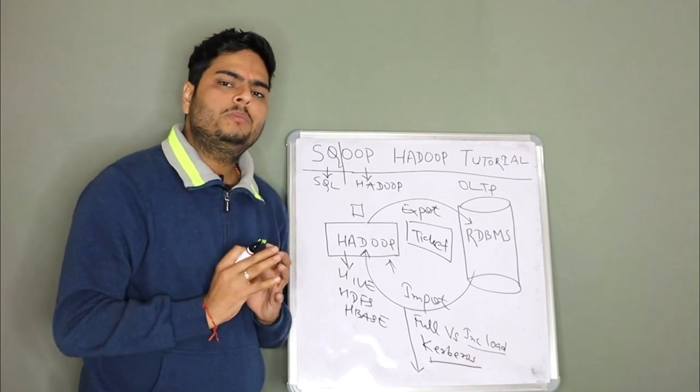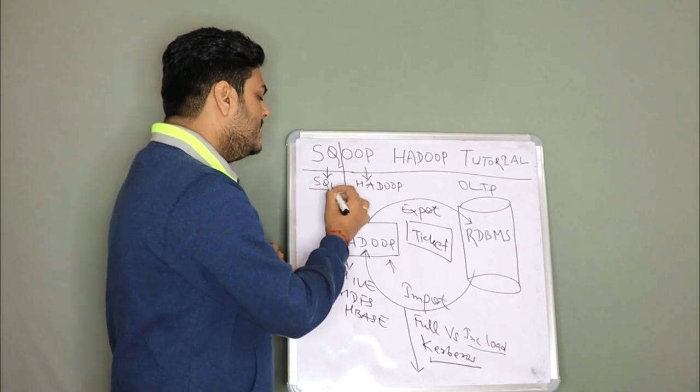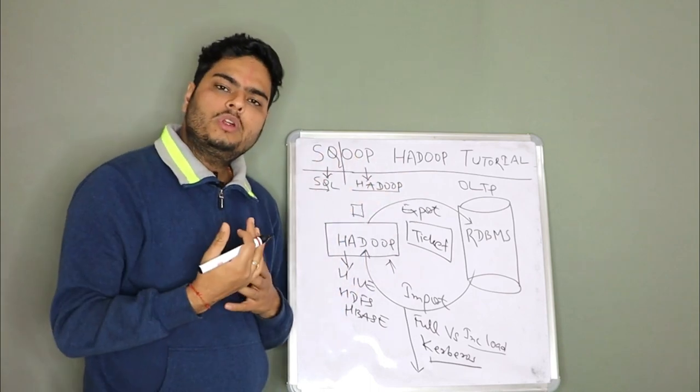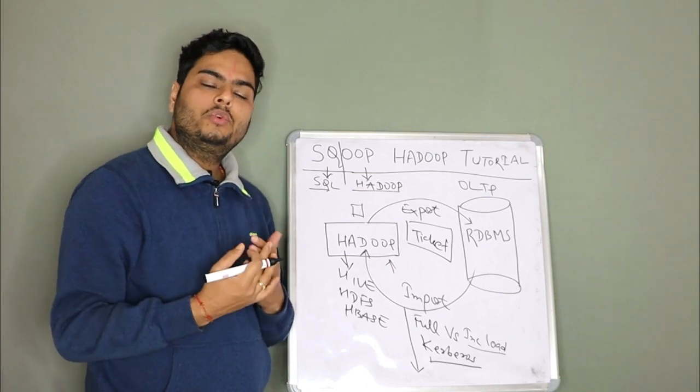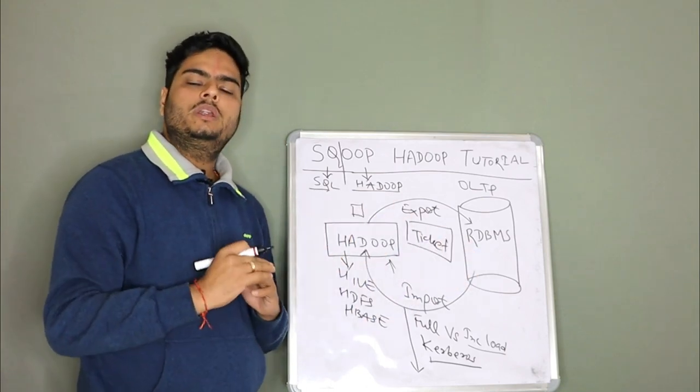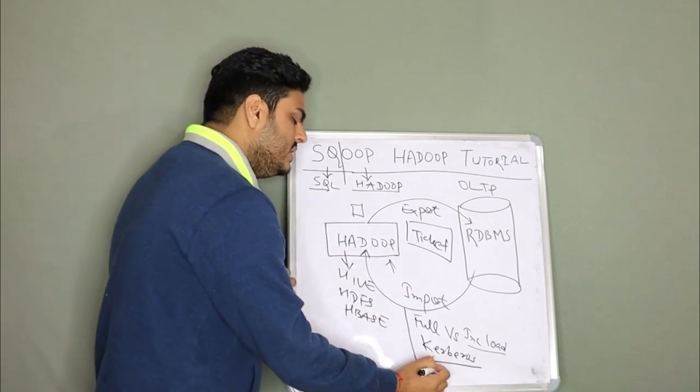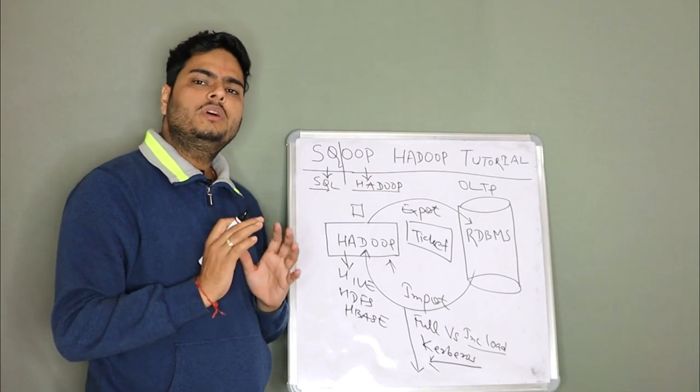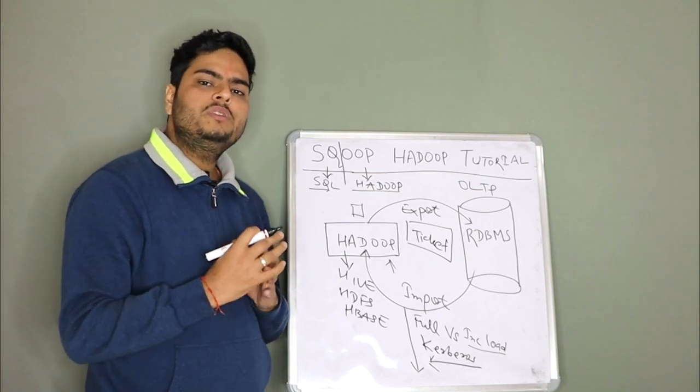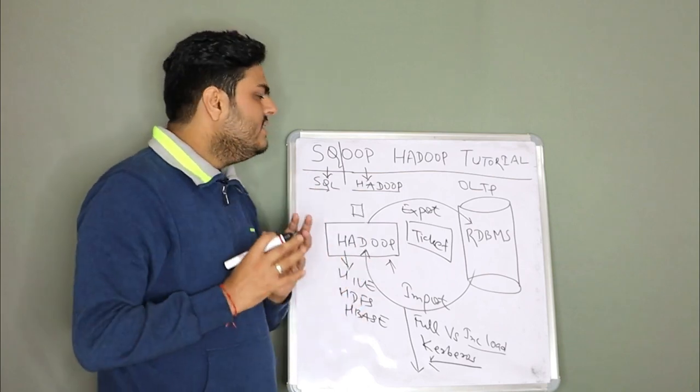So all in all to sum up what all we discussed guys, Sqoop is nothing but made of SQL and Hadoop used for import and export the data to and fro Hadoop to RDBMS supports full load and incremental load both. And it also supports another additional security feature known as Kerberos that is for ticketing purpose to have a secure transmission between two servers. So that is about Sqoop guys.